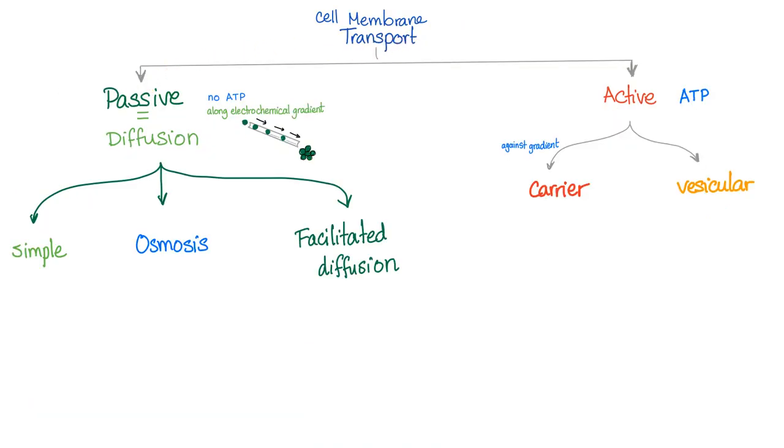Again, cell membrane transport is passive or active. Passive is diffusion with three subtypes: simple diffusion, osmosis which is a subtype of simple diffusion specifically for water, and facilitated diffusion. Active has vesicular and carrier types. Carrier has two types: primary active transport and secondary active transport.